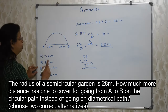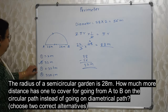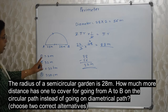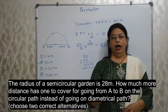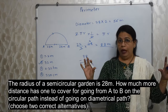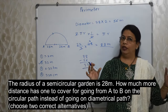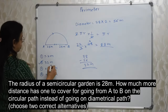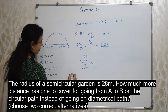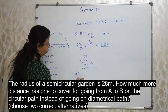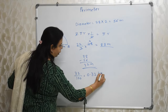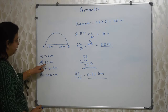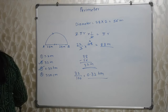Here we are supposed to choose two correct options. One is very clear: 32 meter. For the other one, you need to know the relationship of meter, decameter, hectometer, kilometer. Hectometer is meter divided by 100. So 32 divided by 100 is equal to 0.32 hectometer, which is option 3. So 32 meter is the same as 0.32 hectometer — their value is the same, only the unit differs.